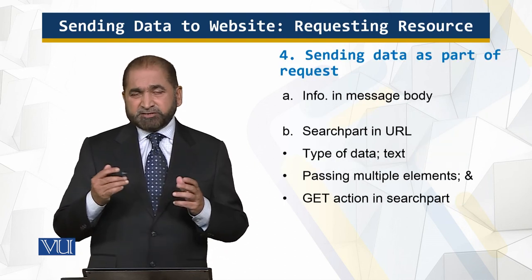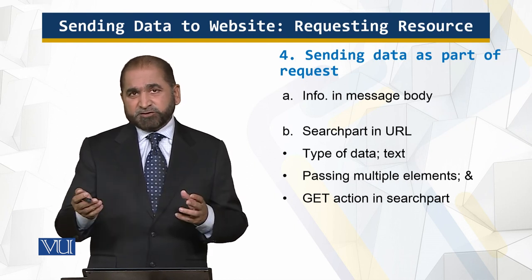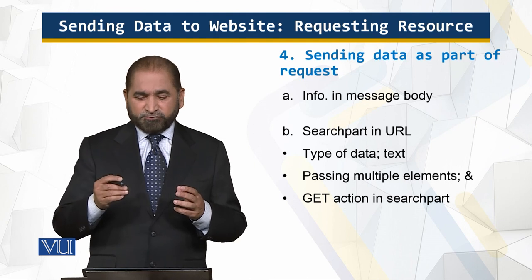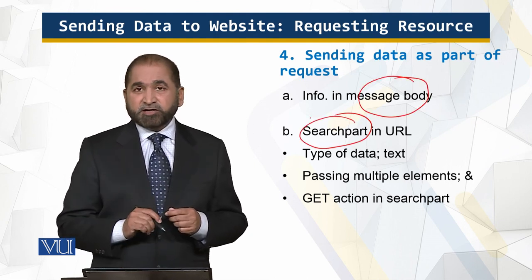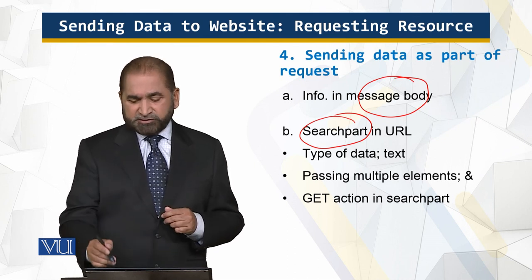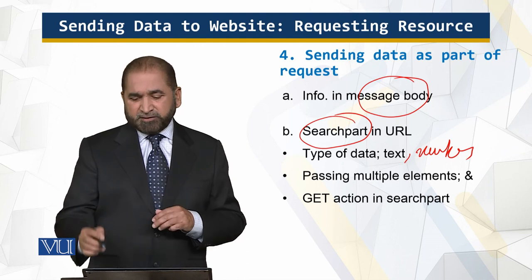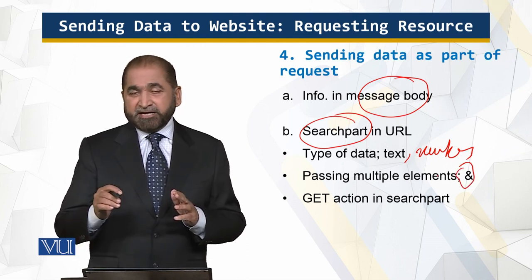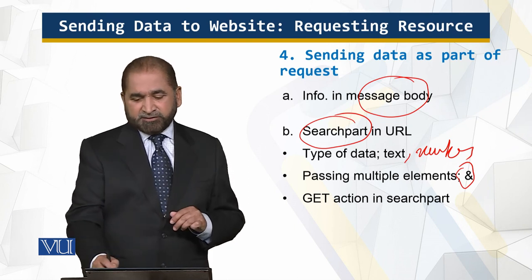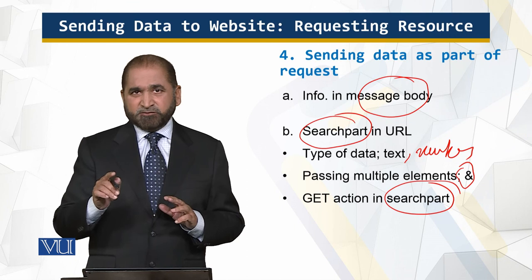Now when you send the command to the web server, you may need to send additional information or data to the web server. That additional data can be part of the message body, and it can also be part of the URL as the search part. In the search part, the type of data is usually text or numbers, and you may be passing multiple values. Those multiple values are separated by an ampersand sign as shown on the screen. Remember: whenever the action is GET, the data is always sent in the search part. Using the GET action has its own limitations and issues, which we'll see in the next slide.